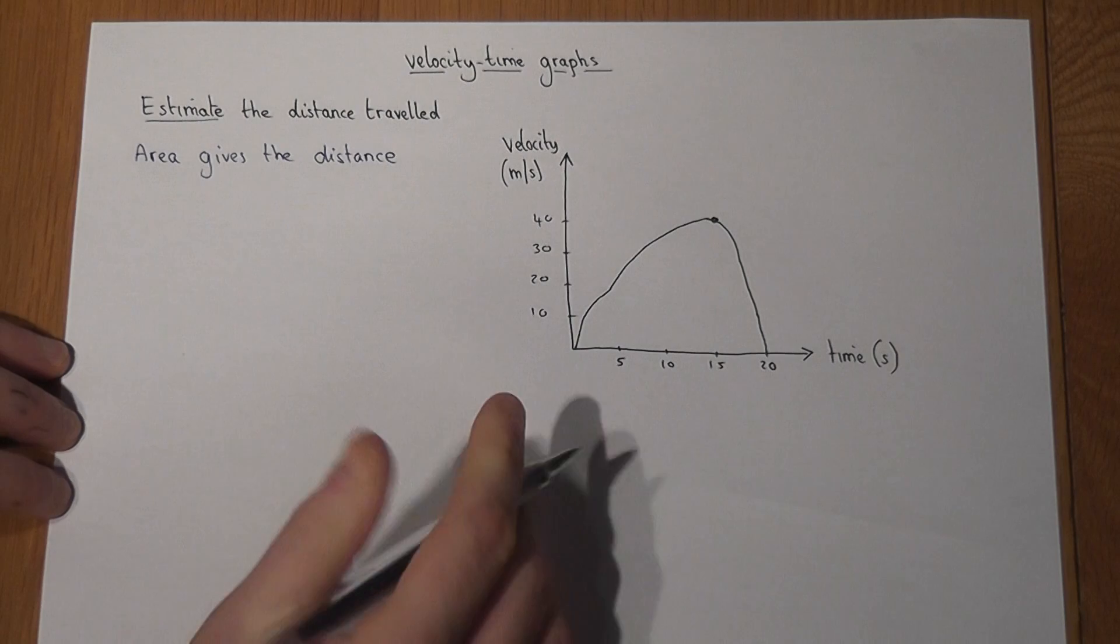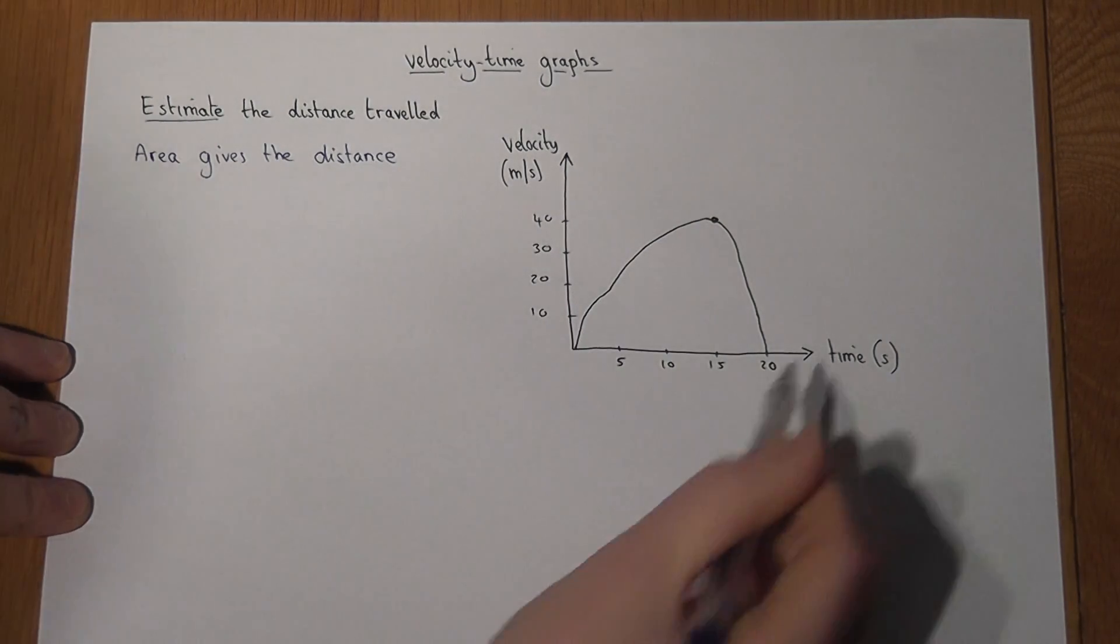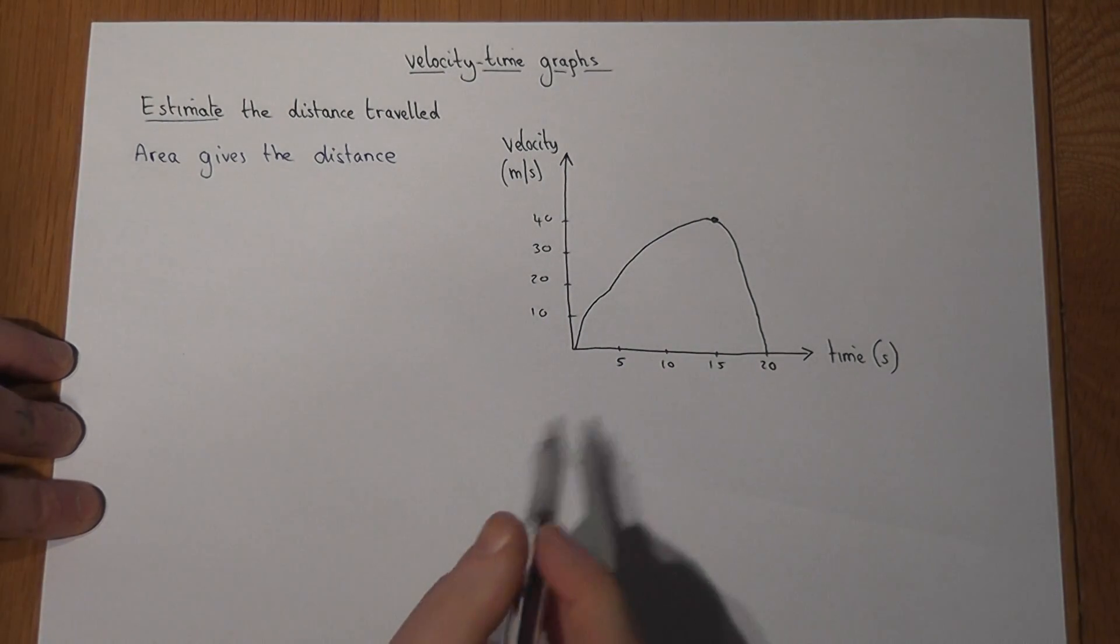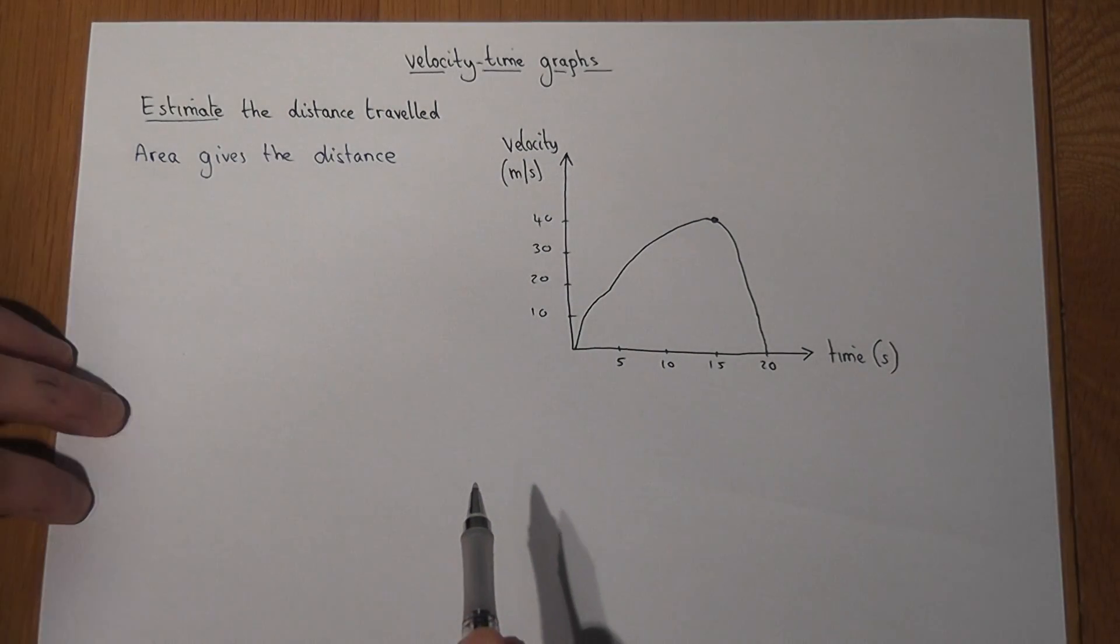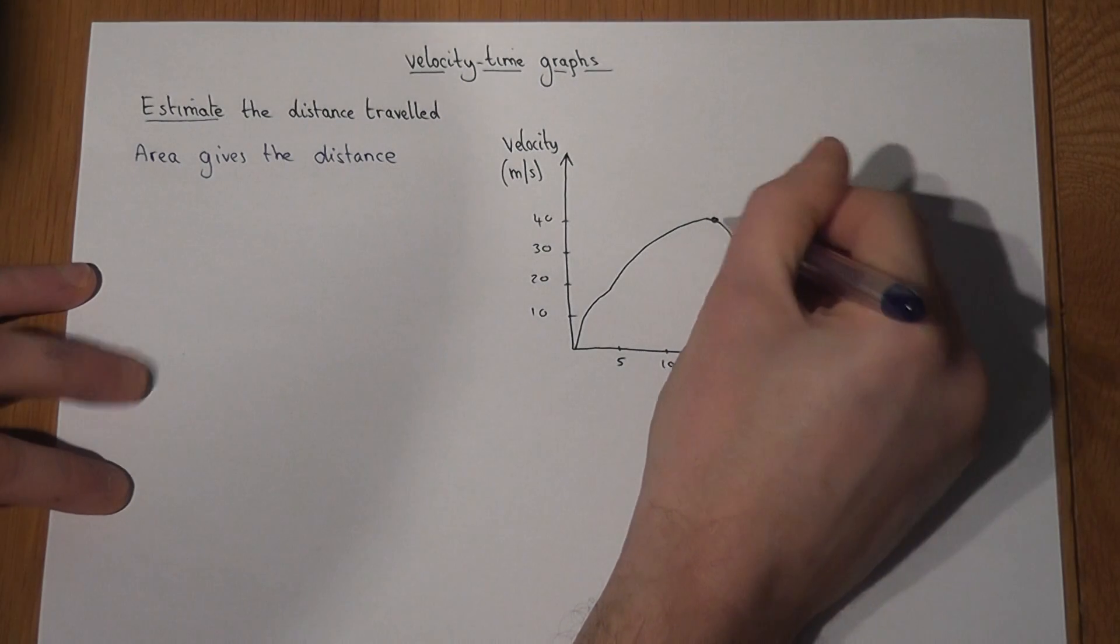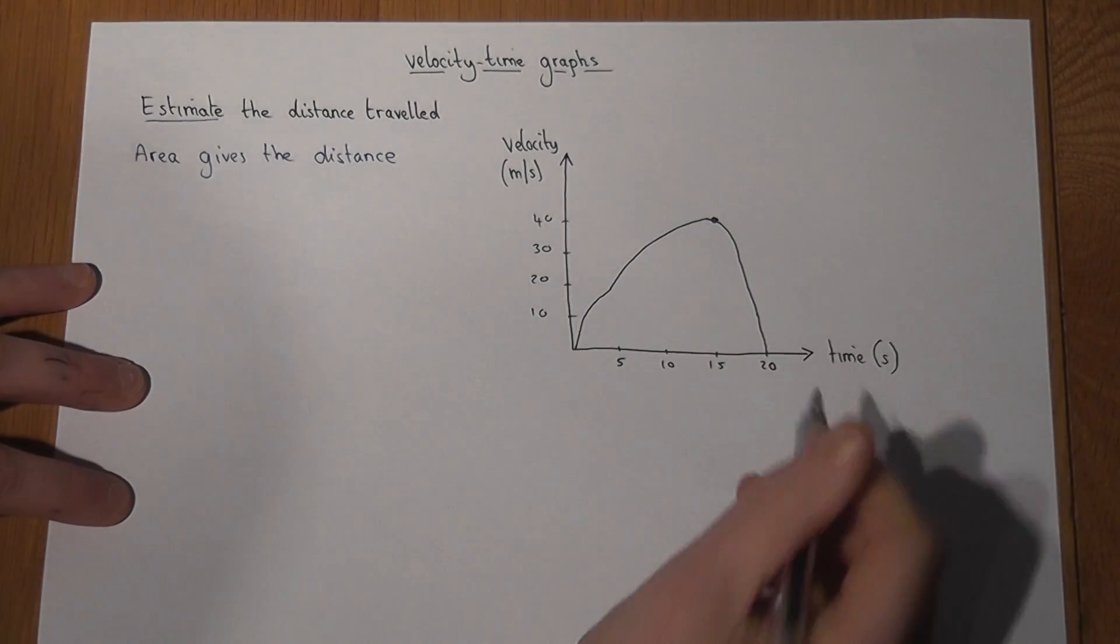To find how far this person's gone in these 20 seconds, I just have to find what the area of this graph is. But it says the word estimate, and that means you split the graph into some simple shapes.